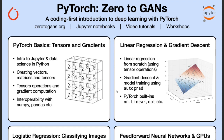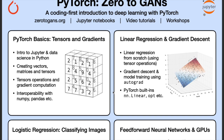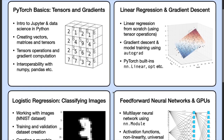Then we will move on to linear regression and gradient descent, where we will implement linear regression from scratch using basic tensor operations. We will also learn the gradient descent optimization algorithm, which creates the foundation for all training algorithms in deep learning. Then we will learn to implement linear regression using some of PyTorch's built-in classes, which will lay the foundation for building more complex networks.